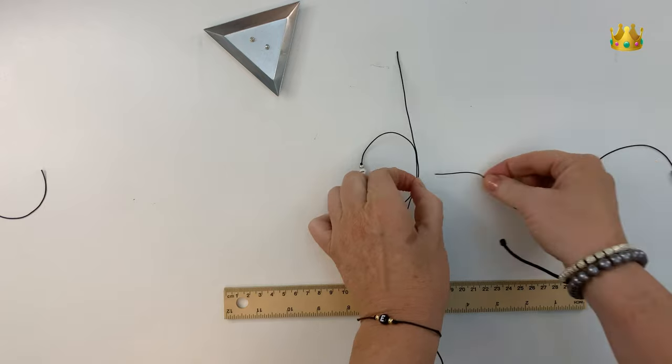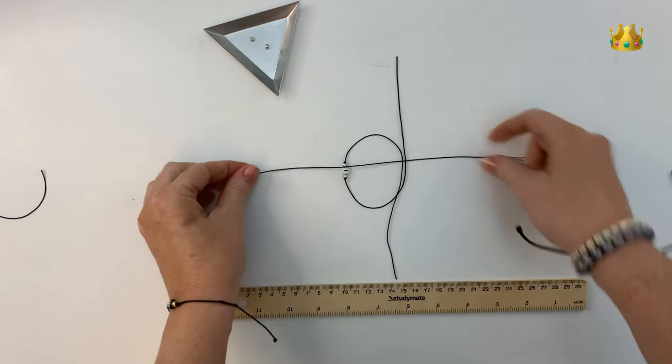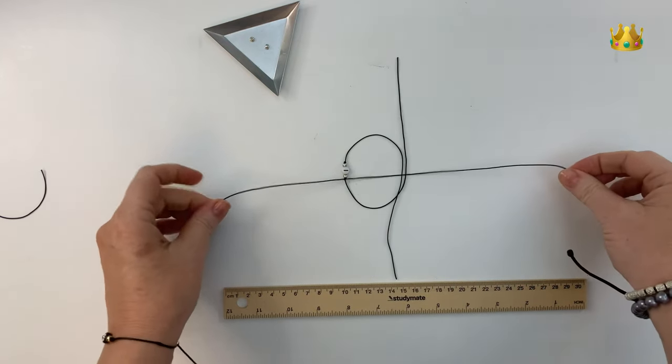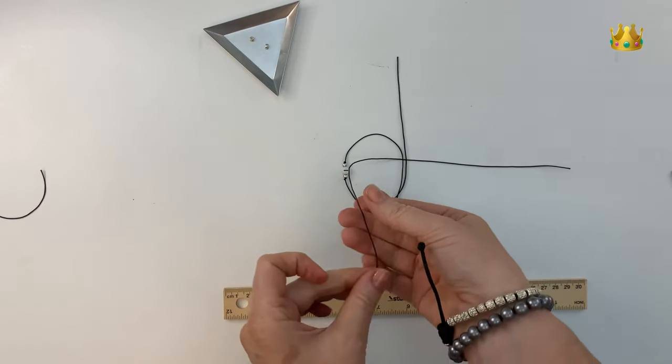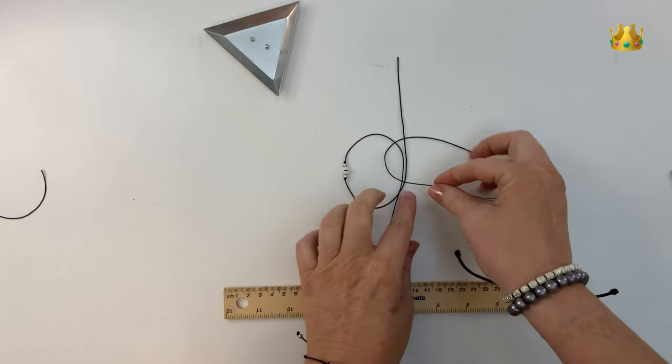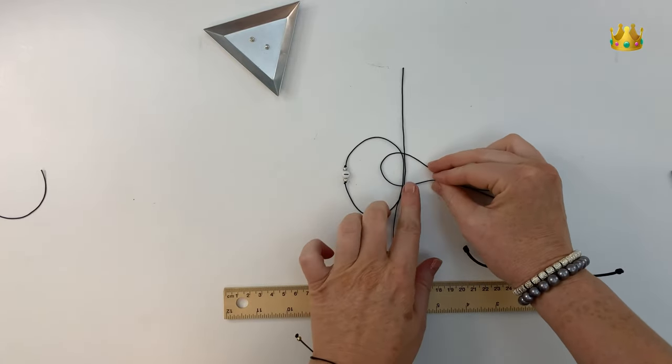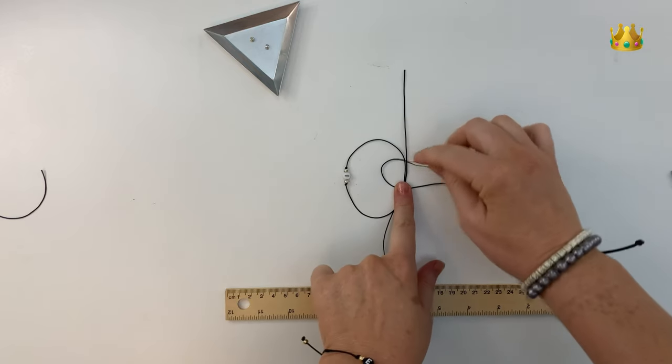So placing this piece underneath our threads where they overlap. Now bringing this left side around to the right, over those other cords and leaving a little loop on the left hand side here.